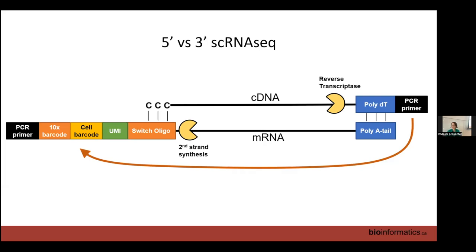Three-prime is much more common because it was first — we were using the poly-T's to capture the RNA and added barcodes there. In theory there's no efficiency difference. However, if you do both three-prime and five-prime, you cannot simply combine those datasets, because the amplification bias depends on sequence such as GC content, and you can see that bias. Three-prime and five-prime data from the same sample won't integrate unless you apply an explicit integration method.